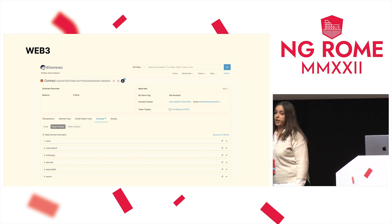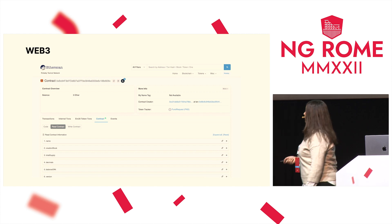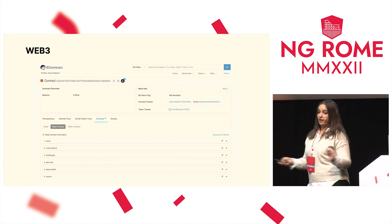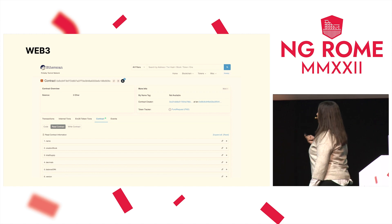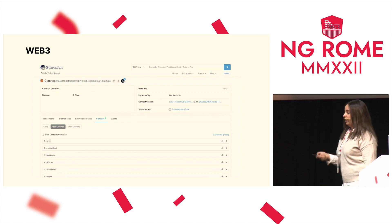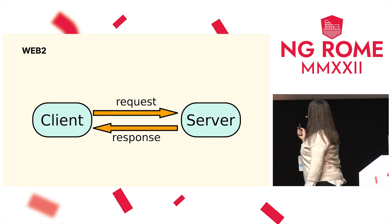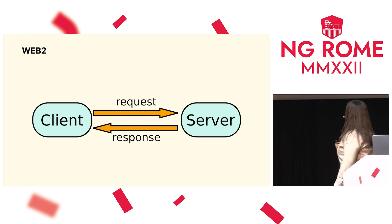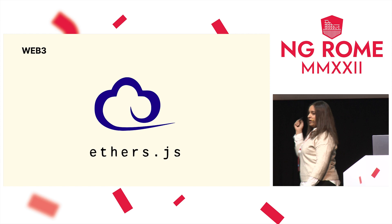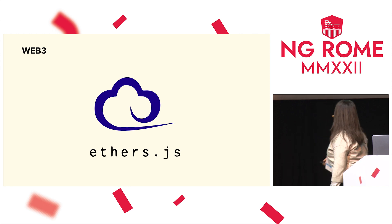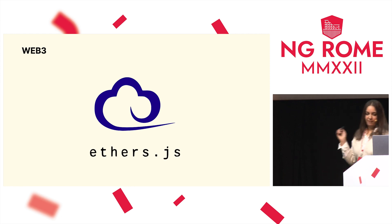In blockchain, you cannot delete or edit anything — you can only write something new, and everything is visible to everyone and immutable. So we can read stuff or write something new. In Web2 we have client-server communication via HTTP; in Web3 we have EthersJS. EthersJS is our best friend in Web3 development. It's JavaScript, so it doesn't matter if you're using Angular, React, or whatever — it works even in Angular. I use it every day and it's perfect.